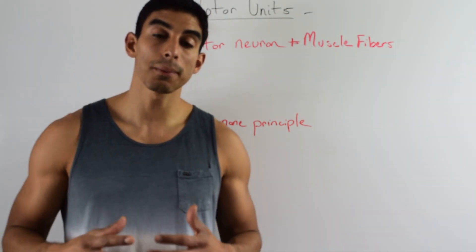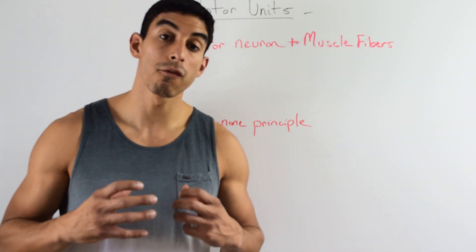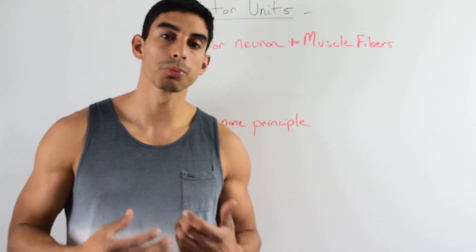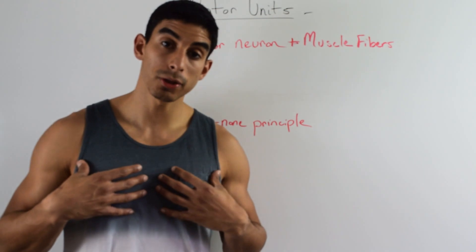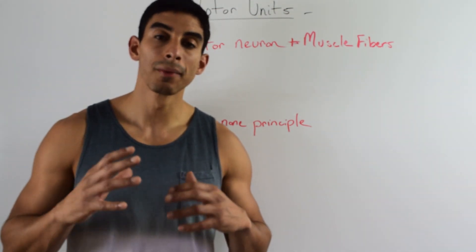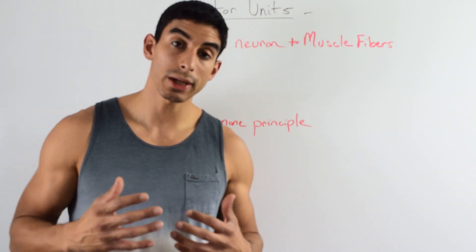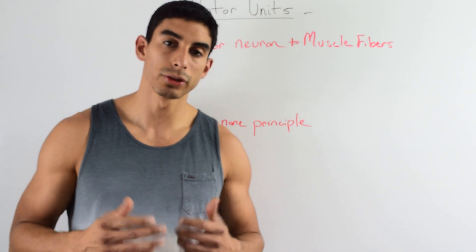These types of motor units are responsible for strong forceful contractions and they're typically found in large muscles like the quadriceps, the pectoralis muscles, and the back muscles. These are capable of large forceful contractions but they're not capable of small intricate detail type contractions.